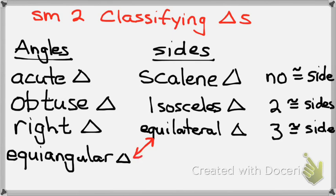If a triangle is equilateral, it has to be equiangular. And as we go through this, I'll show you a little bit why. If it's a right triangle, is it only scalene? No — it could be isosceles.